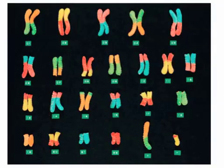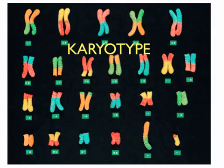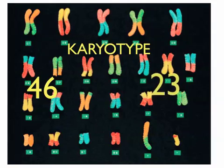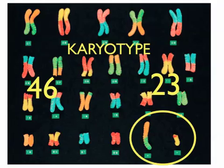This is called a karyotype — this is what your full set of chromosomes looks like. You have 46 total chromosomes, which are 23 pairs. Of those 23 pairs, one pair is your sex chromosomes — the other 22 pairs are the same in both male and female. If you have two long chromosomes, you're female — that's XX. This karyotype shows a male because there's one long chromosome and one small chromosome — that's XY. A karyotype is used by doctors to see if there are any extra chromosomes or chromosomal mistakes, like Down syndrome.